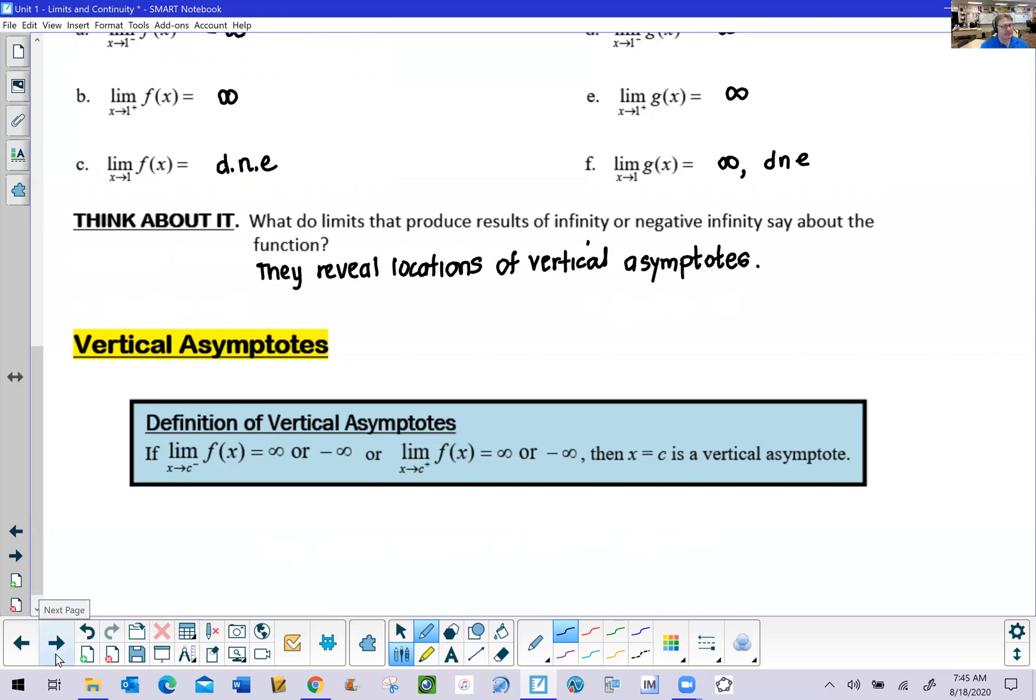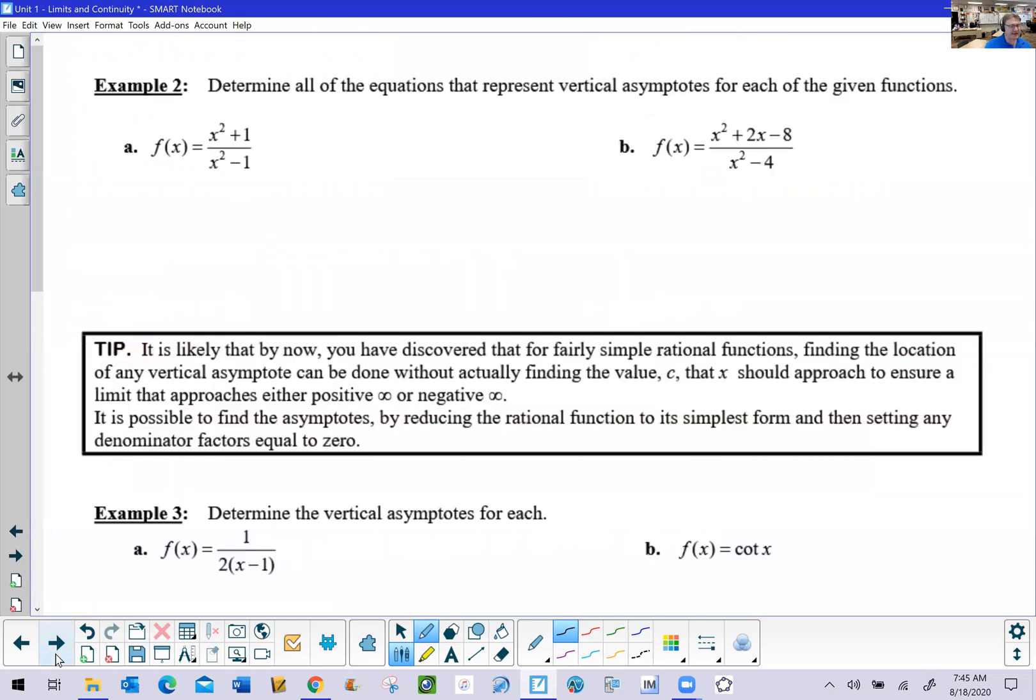Let's take a look at a couple of examples here. It's not often that we have videos that transcend more than one example, but since these are fairly short, we've decided to lump the first three examples together. For number two here, it says determine all of the equations that represent vertical asymptotes for each of the given functions.